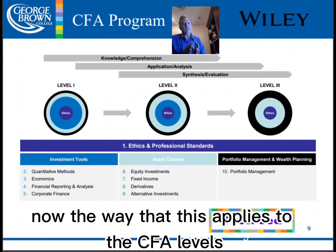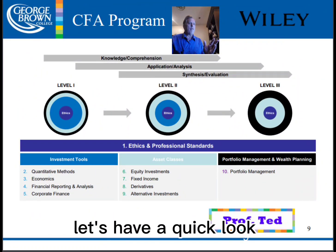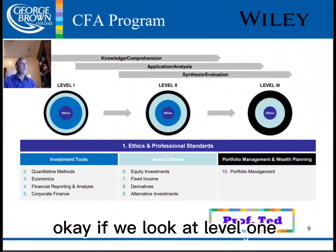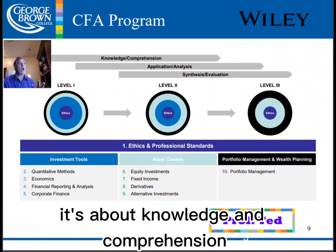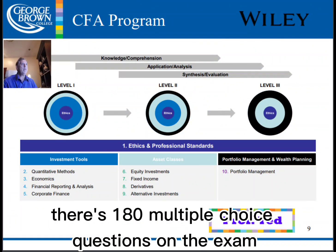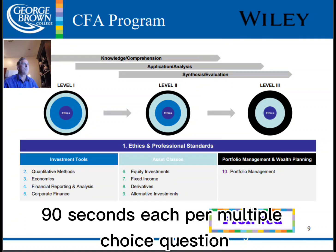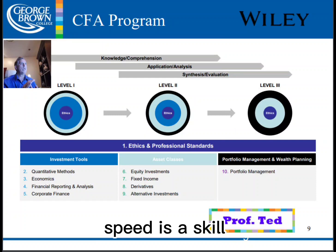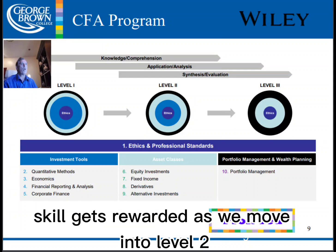The way that this applies to the CFA levels — if we look at level one, it's about knowledge and comprehension. There are 180 multiple-choice questions on the exam, 90 seconds each per multiple-choice question. So it's very much memorization; speed is a skill, and skill gets rewarded.